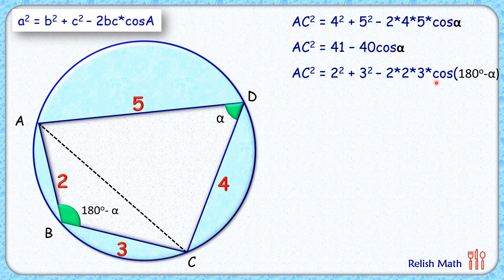But we know that cos of 180 minus alpha is nothing but minus cos alpha. So, replacing this and simplifying it, we'll get AC squared as 13, and this negative will become positive, so plus 12 cos alpha.